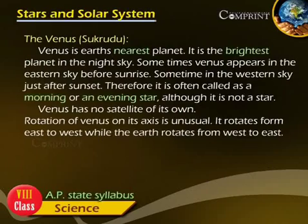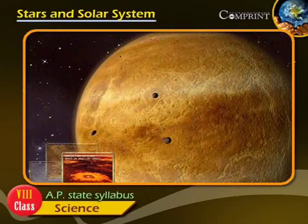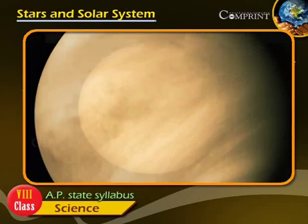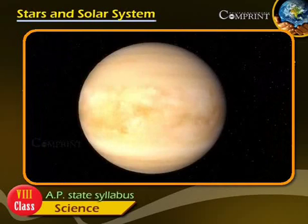Venus. Venus is Earth's nearest planet. It is the brightest planet in the night sky. Sometimes Venus appears in the eastern sky before sunrise, sometimes in the western sky just after sunset.